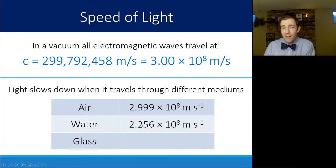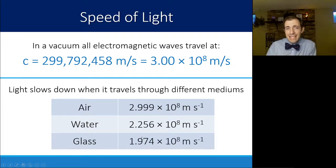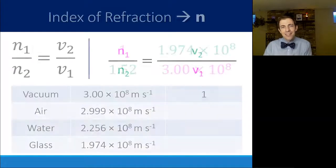In water, though, it's significantly slower, 2.256. And in glass, it's slower still. And these different speeds will result in what we call an index of refraction.